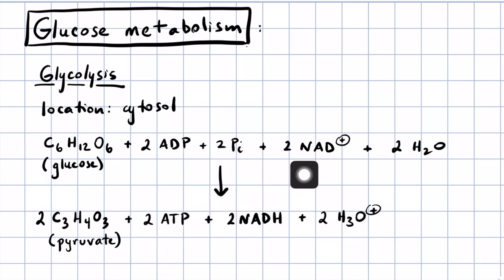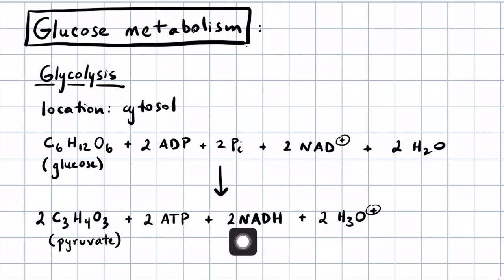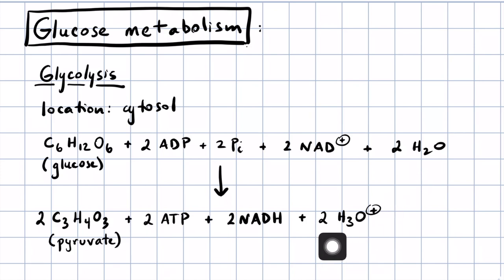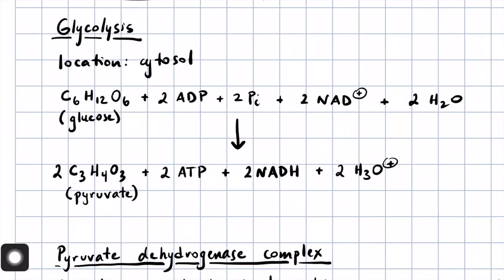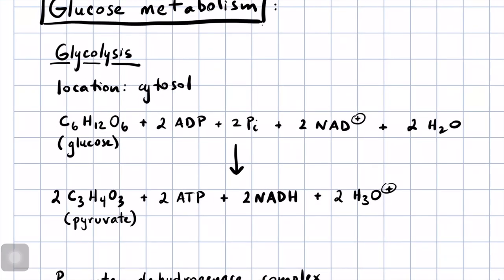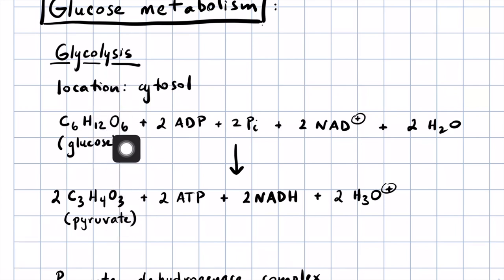We'll convert two molecules of NAD+ into two molecules of NADH. The waters, protons, and hydroniums are just there to balance out the charges in the equation. So glycolysis will go from glucose to pyruvate, and we'll talk about the reactions and mechanisms that connect us from start to finish.